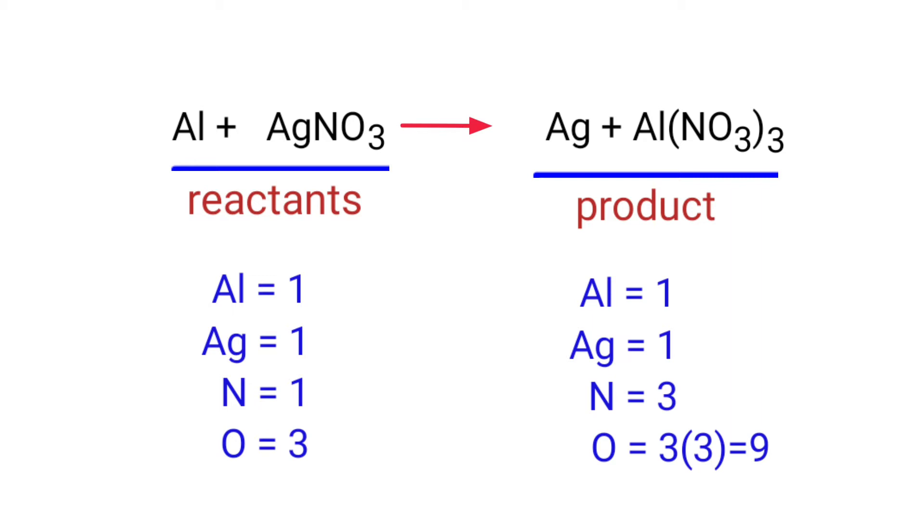If you look at this equation, the equation is not balanced. In the reactants side, there are one aluminum atom, one silver atom, one nitrogen atom, and three oxygen atoms.